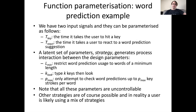We have two input signals parameterized as tkey and treact, where tkey is the time it takes the user to hit a key, and treact is the time it takes a user to react to a word prediction suggestion. A latent set of strategy parameters generates process interaction between the design parameters: Lmin means restrict word prediction usage to words of a minimum length; Klook means type k keys and then look; Pmax means only attempt to check word predictions up to Pmax keystrokes per word. Note that all of these parameters are in fact uncontrollable by the designer.